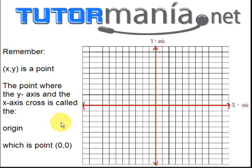The point where the y-axis and the x-axis cross is called the origin, which is point 0,0, which is right here. The main line going up and down, we call that the y-axis. And the main line going from left to right, we call that the x-axis.